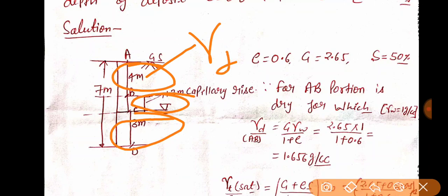That is gamma d. How much density is gamma d? You can write gamma t or gamma saturated. If the saturation is completely saturated, then we call it gamma saturated. But it is not completely saturated — the saturation is only 50 percent.